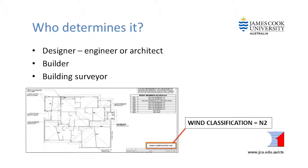Who determines the wind classification? It is usually calculated by the designer, engineer or builder and it is written on the drawings for any new houses, major renovations or additions. It may also be noted on an application for building approval for minor work such as re-roofing.